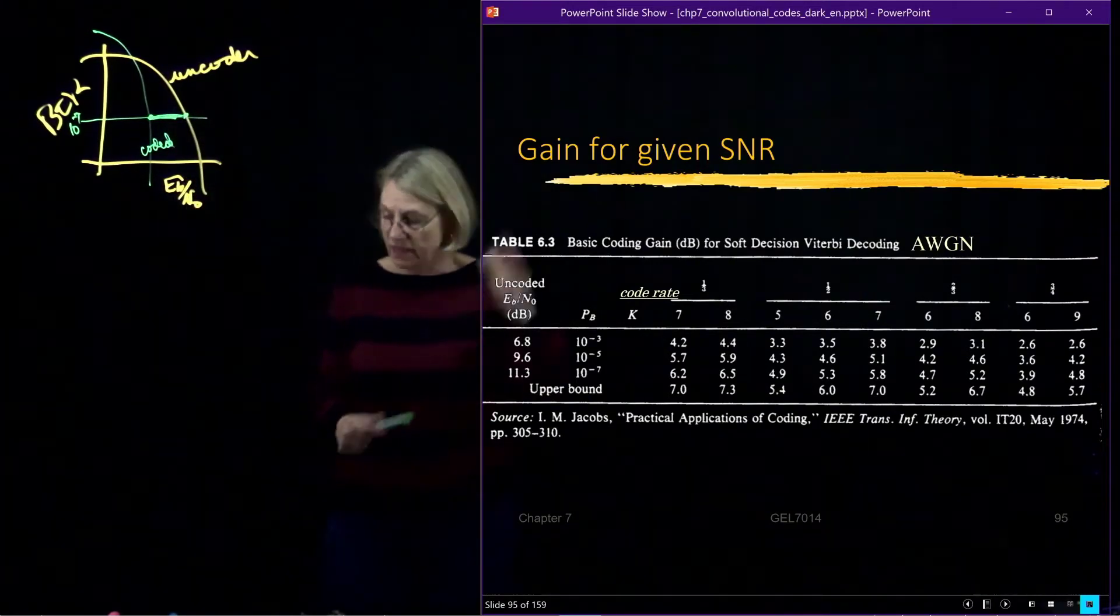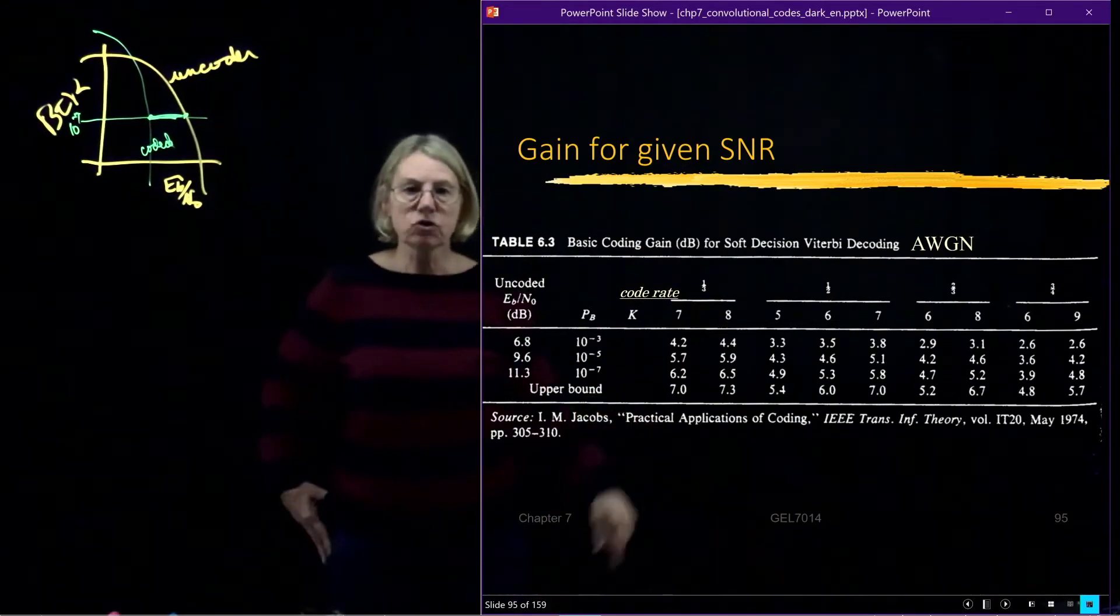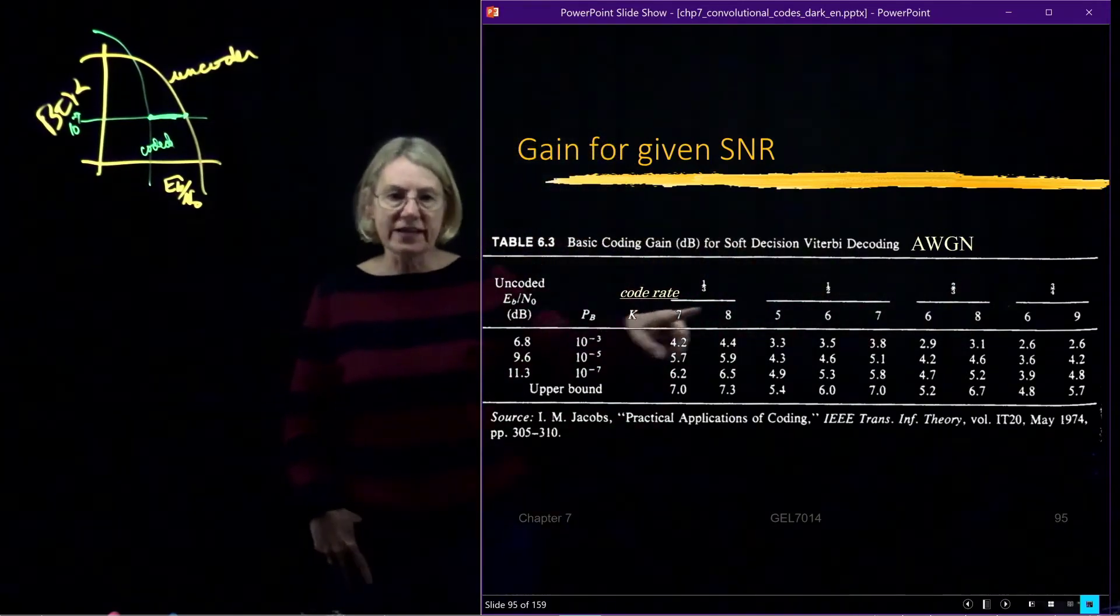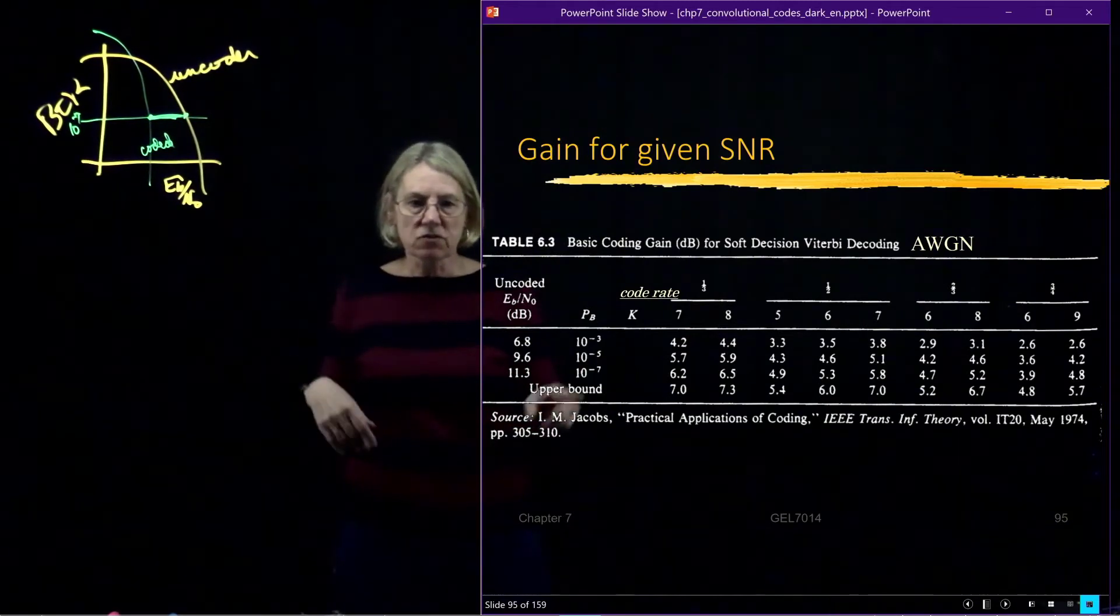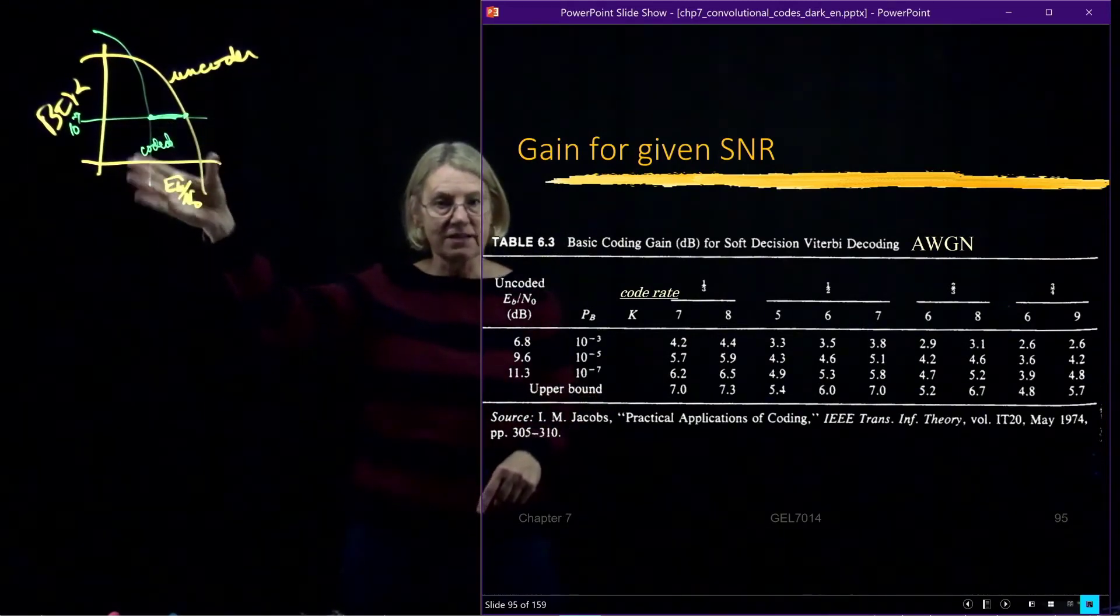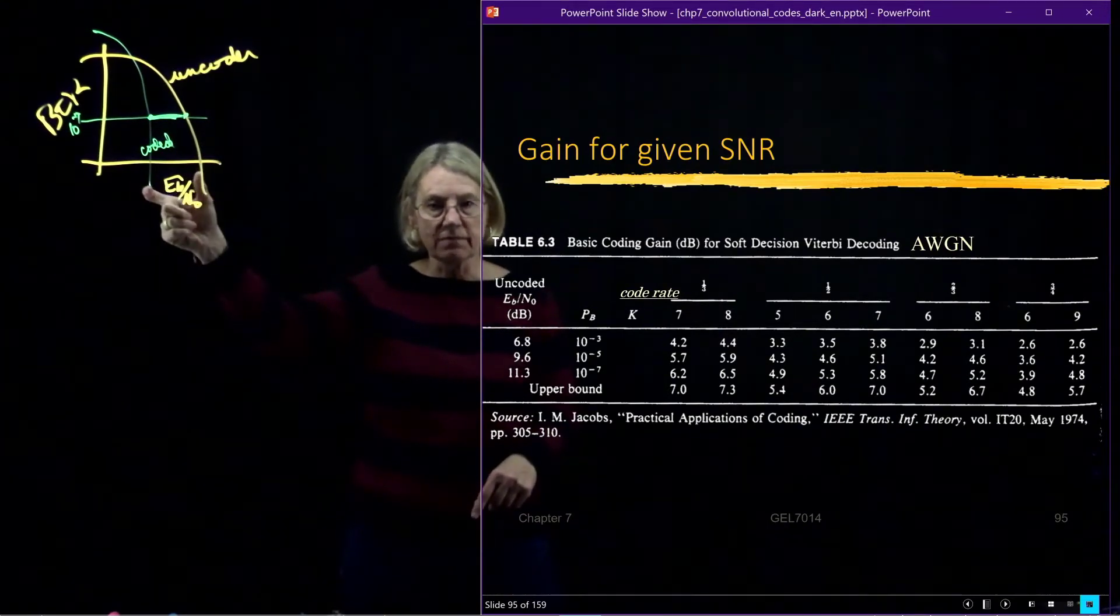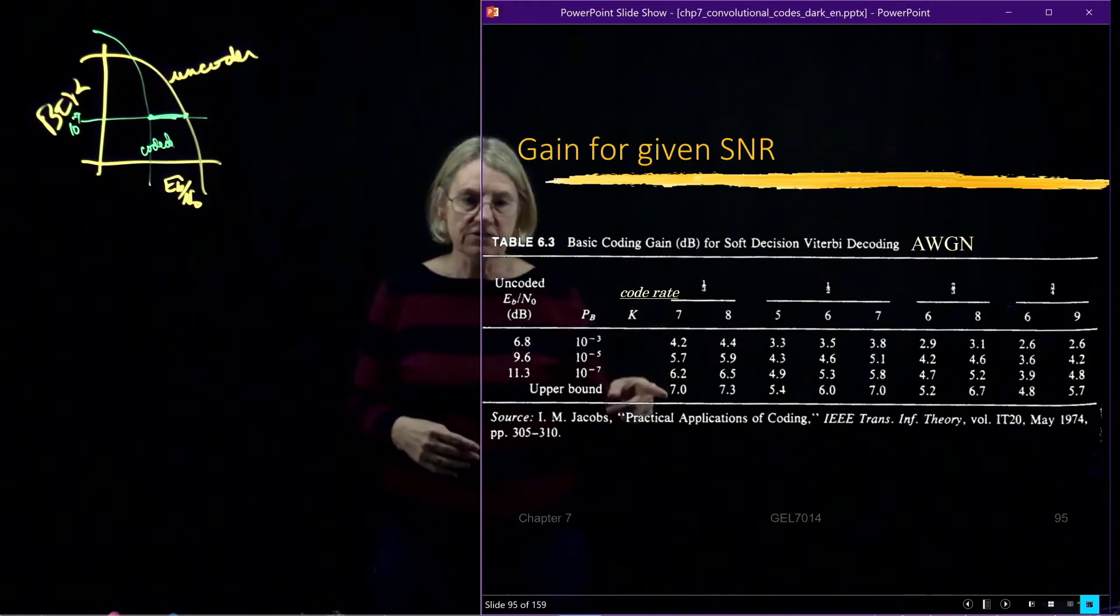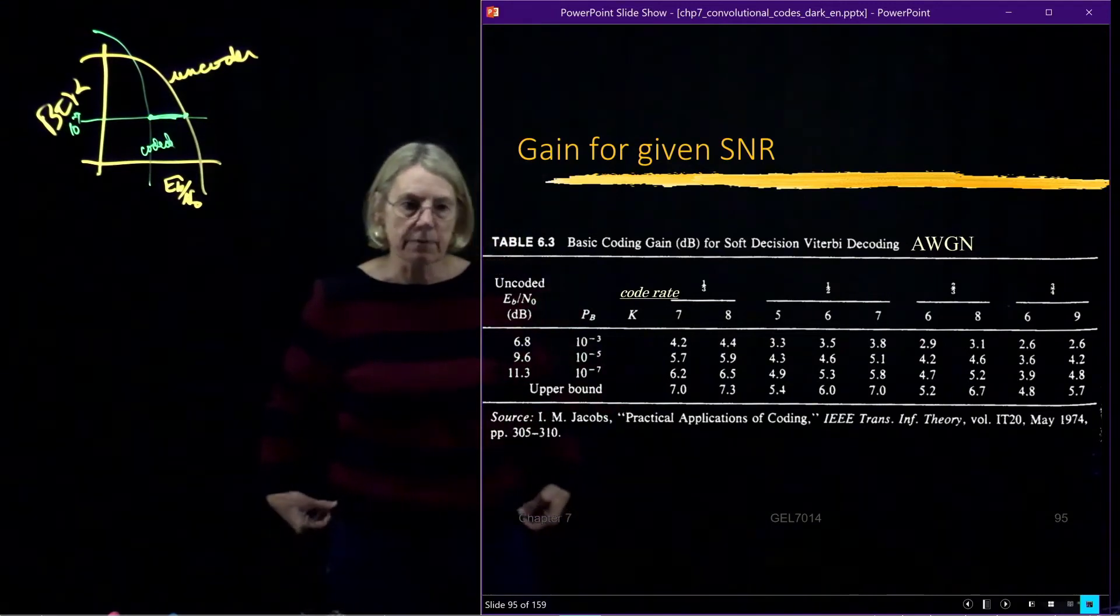And for the coded one, we would pick a level of performance that we were interested in, 10 to the minus 3, 10 to the minus 5, 10 to the minus 7. And we would see for that value here what was the gain of that code. So in this table, we have looked at different code rates, different constraint lengths, and cuts at different levels. So the upper bound is sort of an asymptotic as we get farther down on the curve how much gain we could achieve. So we can see here for different codes how close they might actually get to this upper bound.